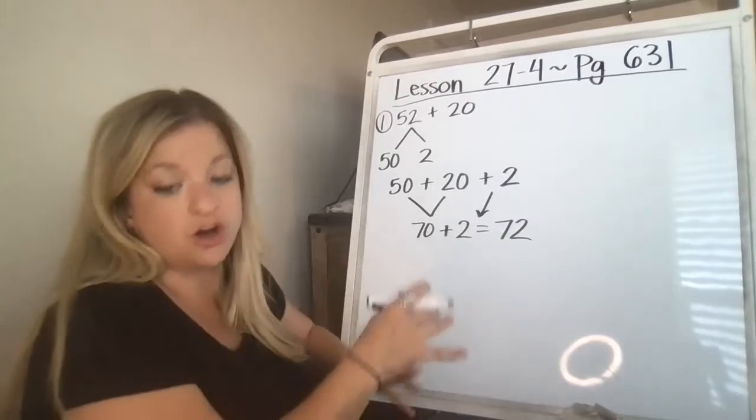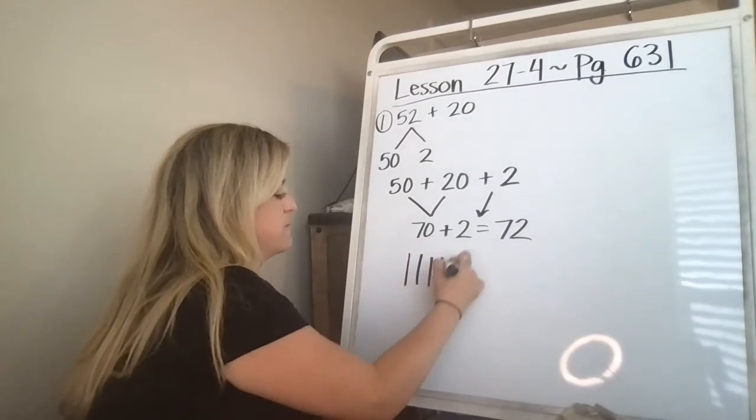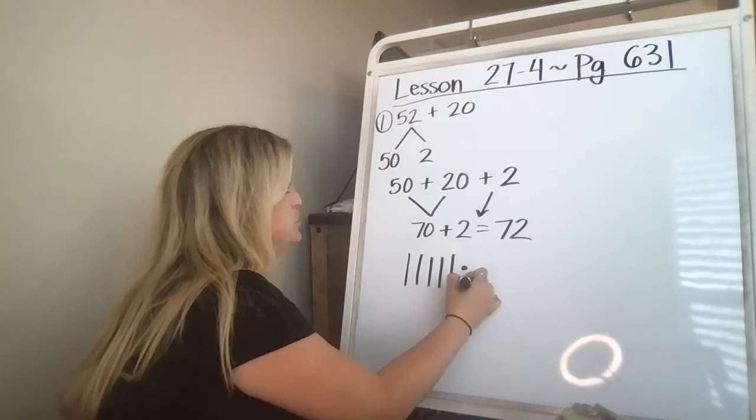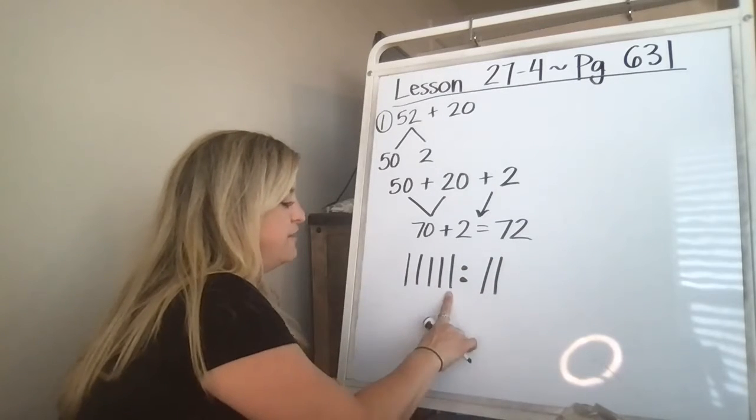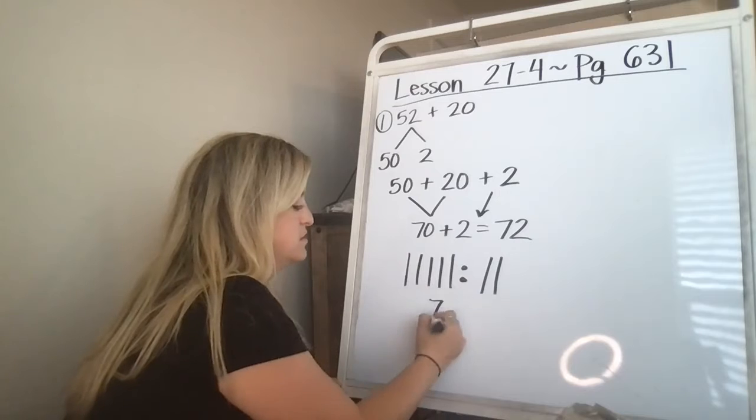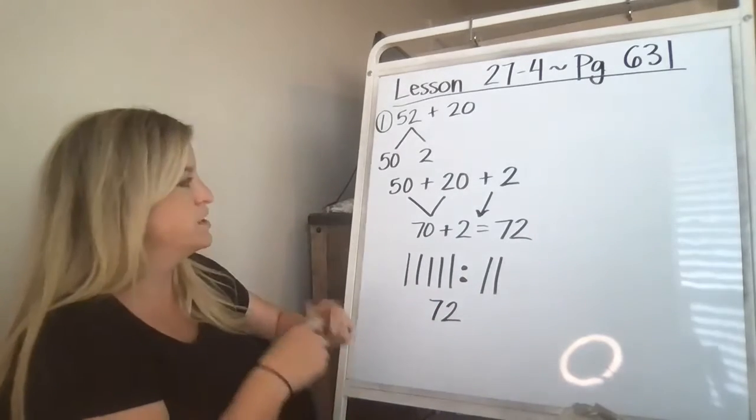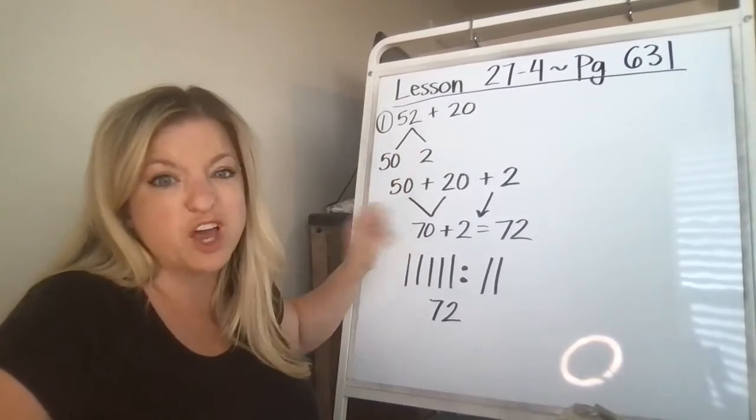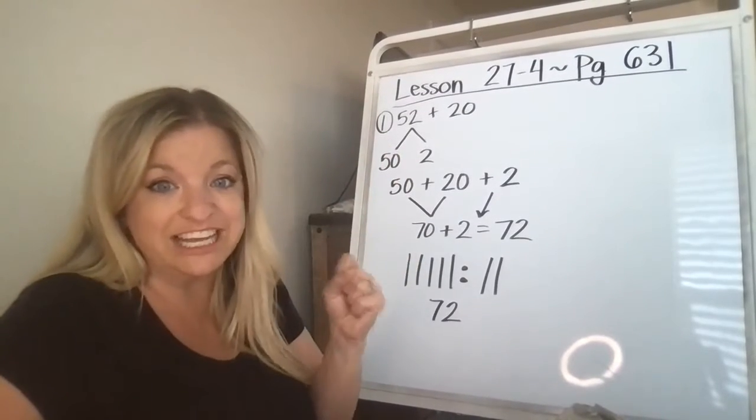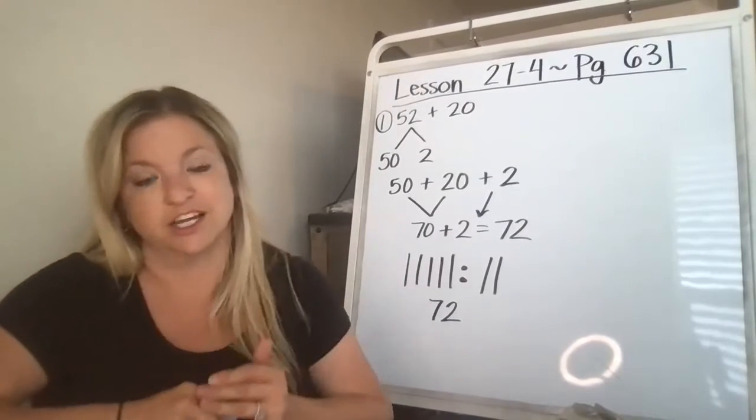You could also draw it, which is 1 2 3 4 5, 1 2 plus 2 more, 1 2 5 6 7 1 2 2. So either one helps you. This one might be like oh my gosh what is Ms. William doing, but I feel confident that you will get it because you guys have been working so hard and I'm so proud of you. So keep going and keep trying.